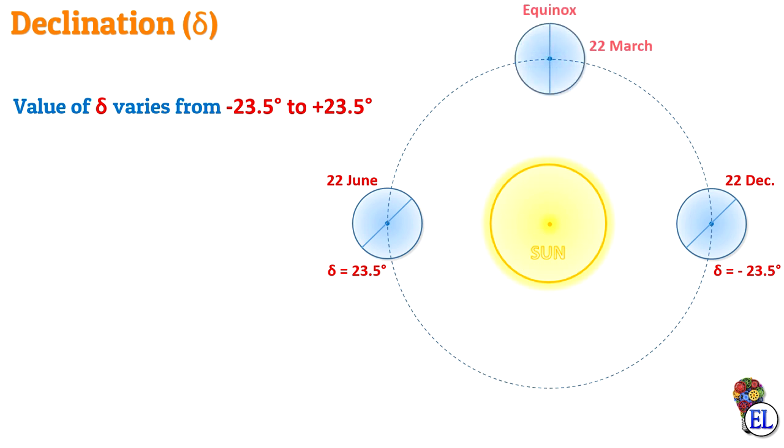Also, the angle delta is 0 at the two equinoxes, that is March 22nd and September 22nd, as you can see. Stay tuned with us, as more videos related to this topic will be provided soon. Do share this video with your friends.